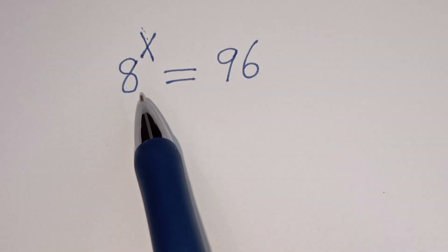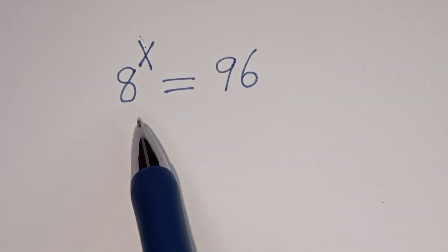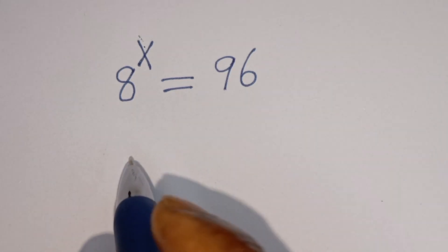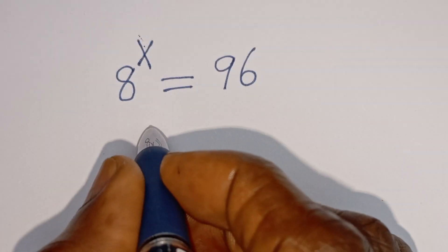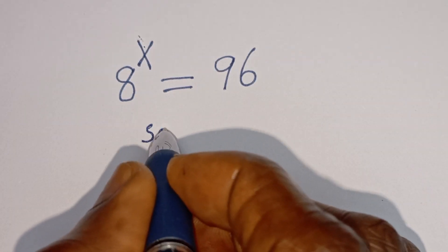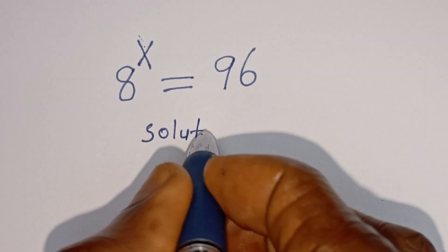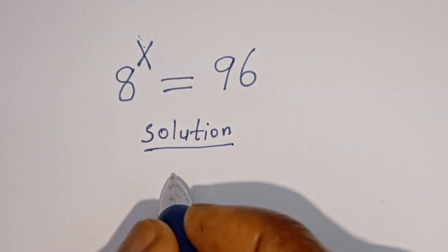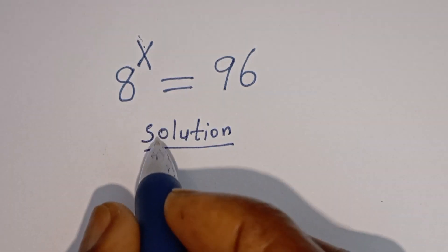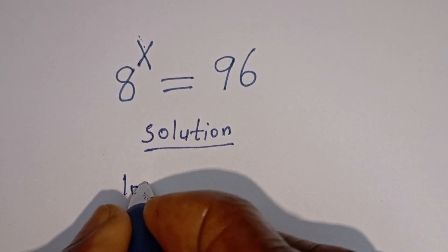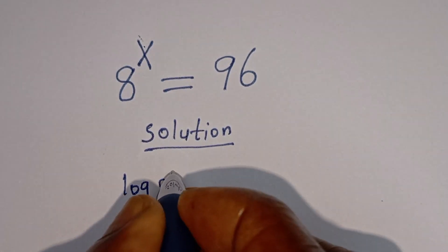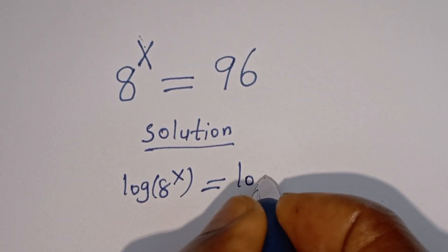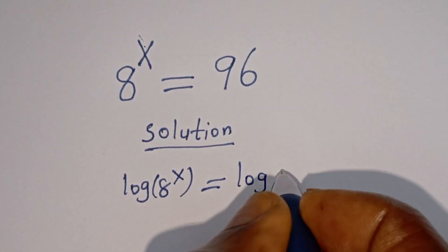Hello. How to solve for s in this equation: h to the power of s is equal to 96. Now let's take the log of both sides of this equation. We have log h to the power of s is equal to log 96.